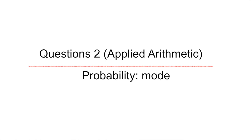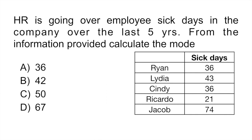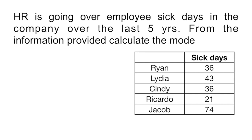Question 2 is an applied arithmetic problem looking at probability — specifically mean, median, and mode. This question looks at mode. Human Resources is going over employee sick days in the company over the past five years. From the information provided, calculate the mode.